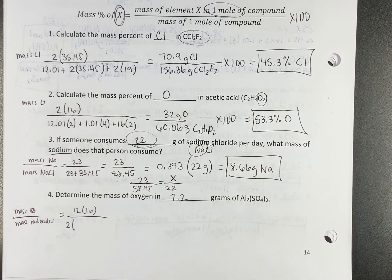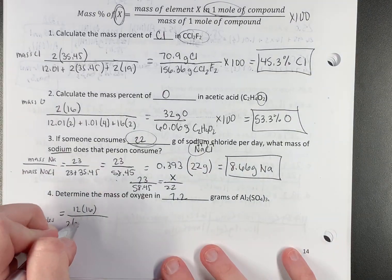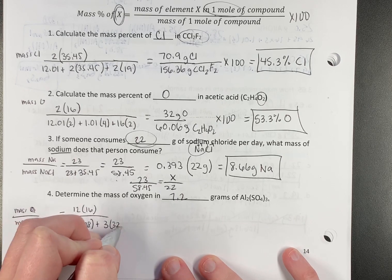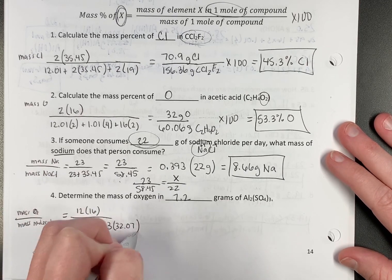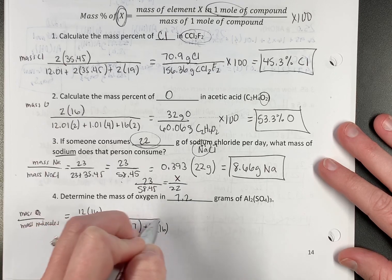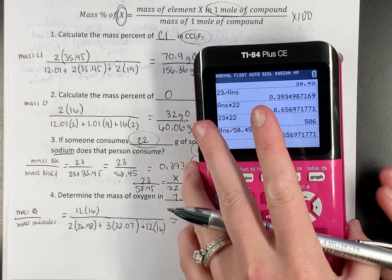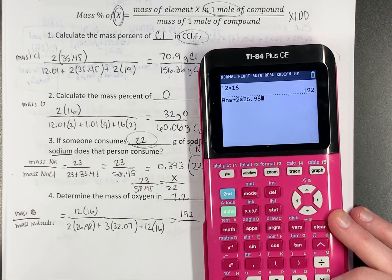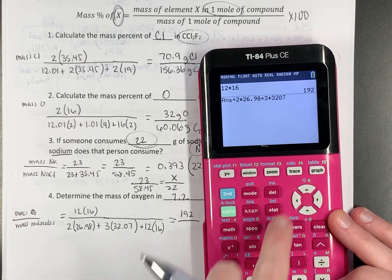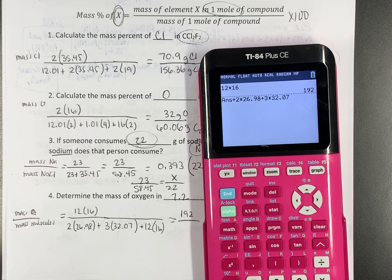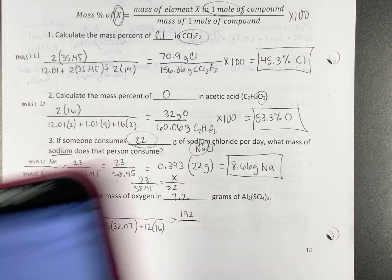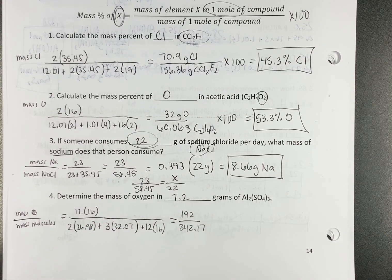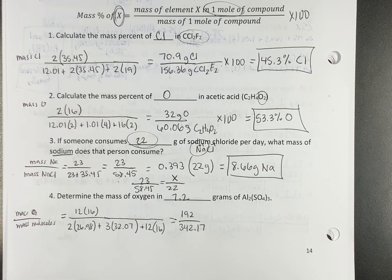So now we're going to have our calculation with 12 times 16 on top, and then we need the periodic table. How many aluminums do we have? Two, at 26.98. How many sulfurs do we have? Three, at 32.07. My molar mass, I got 342.17. Yes, no, maybe? Okay.